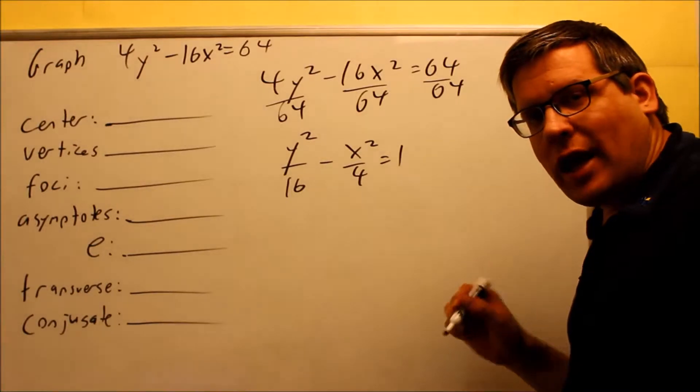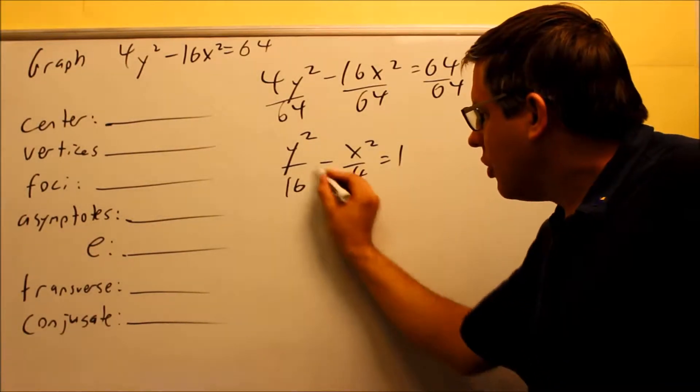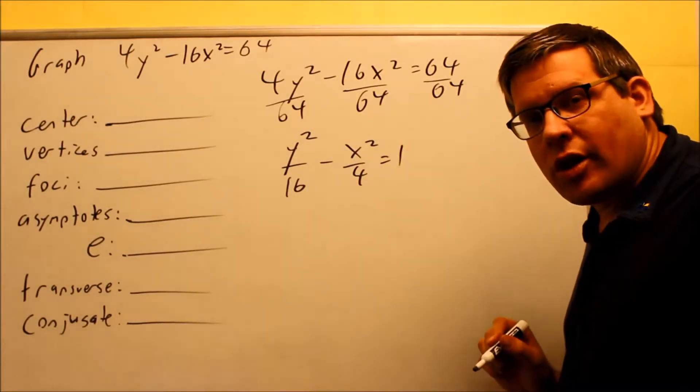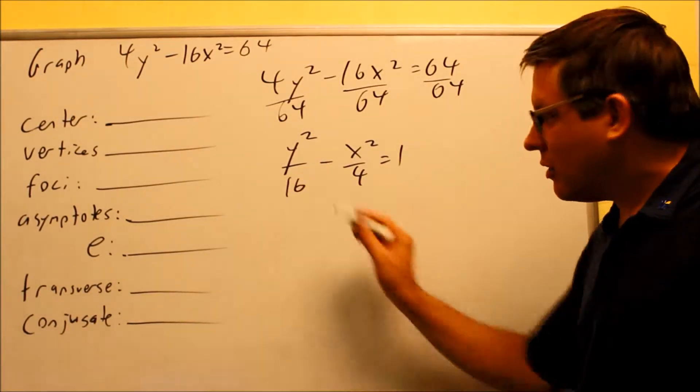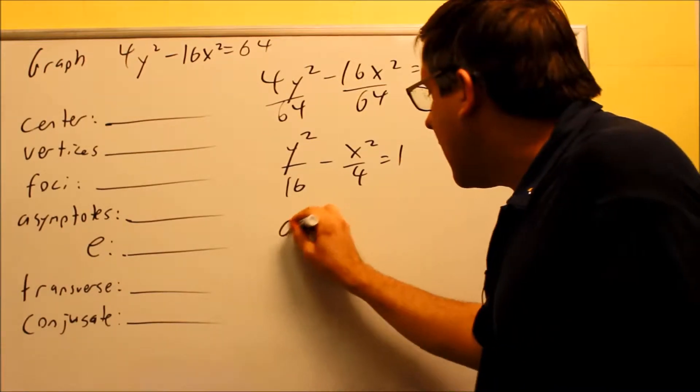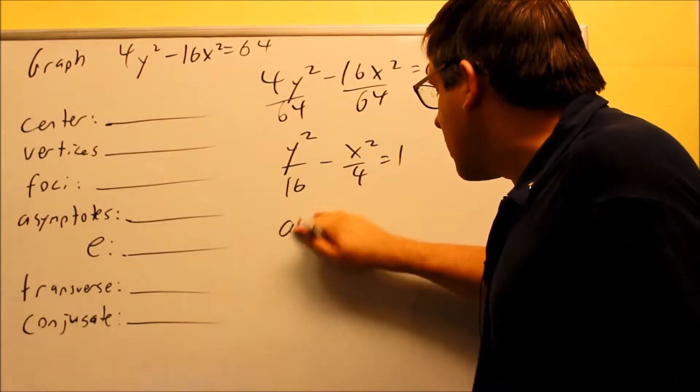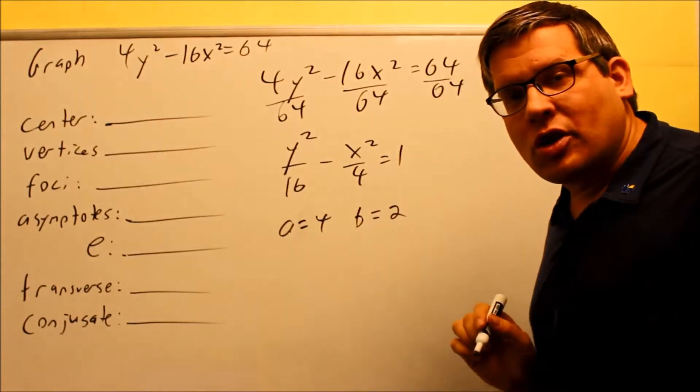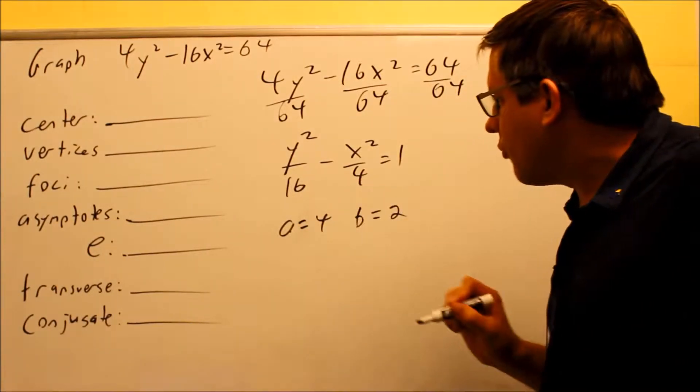As I mentioned before, the a value is always physically what comes underneath the first fraction. It doesn't matter if it's an x or y that comes first, whatever number comes first. So a is going to be the square root of 16, which is 4, and your b is the square root of 4, which is 2. That comes directly from your formula there.